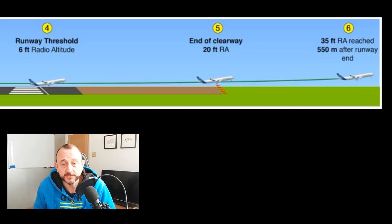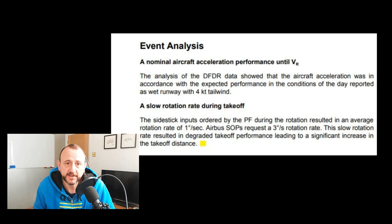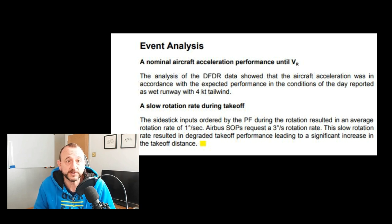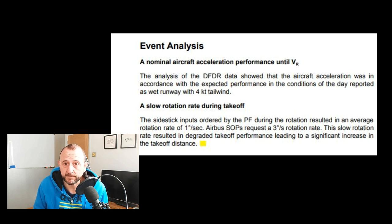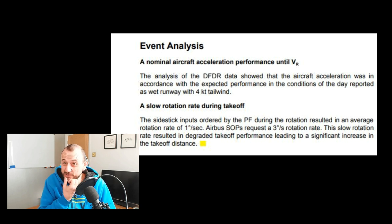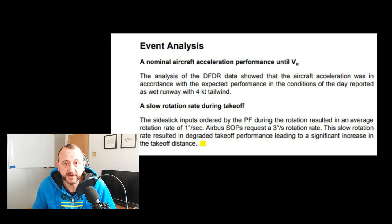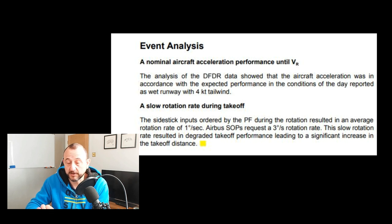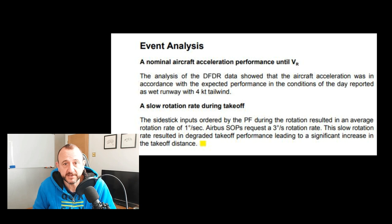So how did this happen? The event analysis shows normal aircraft acceleration performance until VR — everything fairly standard at that point. Analysis of the digital flight data recorder showed that the aircraft acceleration was in accordance with expected performance in the conditions: a wet runway with four knot tailwind. However, slow rotation rate during the takeoff was the issue. The side stick inputs ordered by the pilot flying during rotation resulted in an average rotation rate of one degree per second — Airbus SOP requests three degrees per second. This slow rotation rate resulted in degraded takeoff performance, leading to a significant increase in the total takeoff distance.